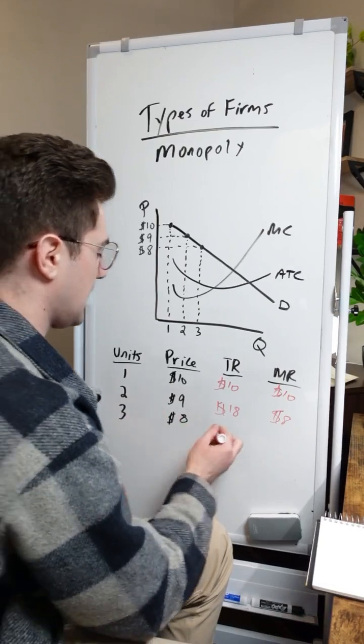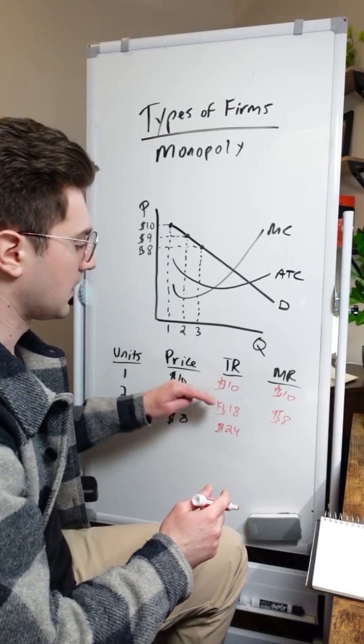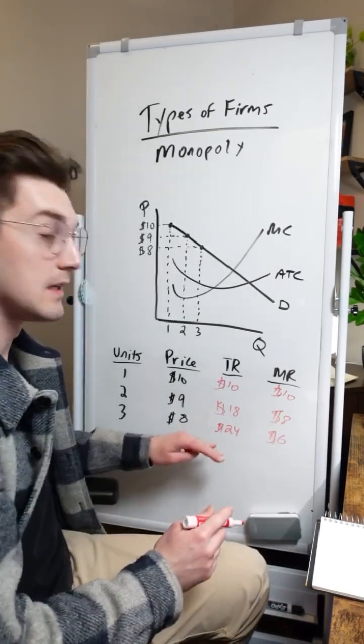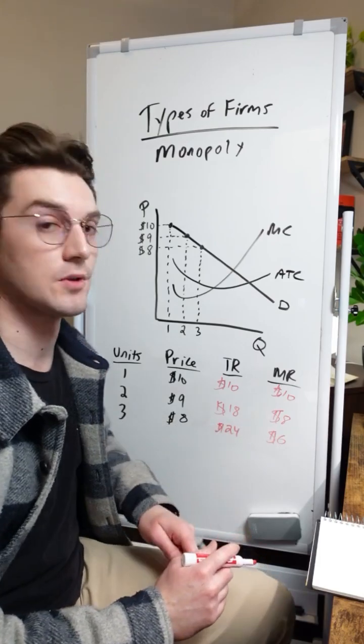And then for the third unit here, three times eight is 24, and 24 minus 18 is six bucks. That third unit is adding $6 to our total revenue.